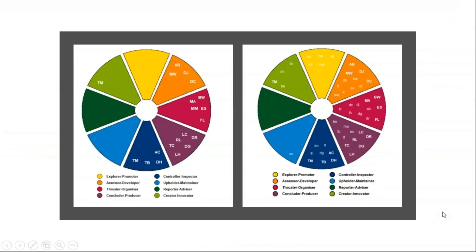Last time we talked about the team management profile, and what you're seeing here is two teams. We've plotted their profiles on the wheel that Chris talked about last time. This team is very much skewed towards the right-hand side of the wheel — very much a producing and organising team, a little bit light on the left-hand side, which is more the reporting and maintaining side of things. The graph on the right shows people's first preference and their related preferences.